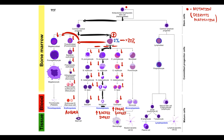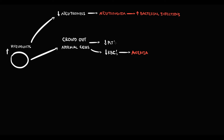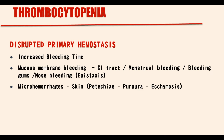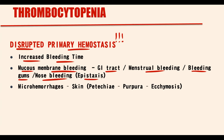Myeloblasts also crowd out cells from the thrombocyte lineage, causing thrombocytopenia. As platelet production decreases, primary hemostasis is disrupted. Disruption of primary hemostasis manifests with increased bleeding time, bleeding from mucous membranes — primarily from the GI tract — and frequent nosebleeds (epistaxis). Microhemorrhages develop that manifest on the skin as petechiae, purpura, and ecchymosis.